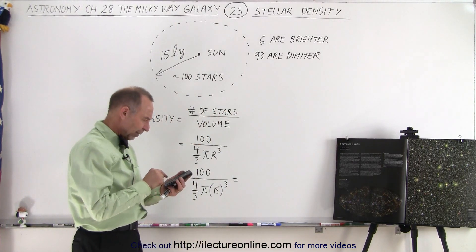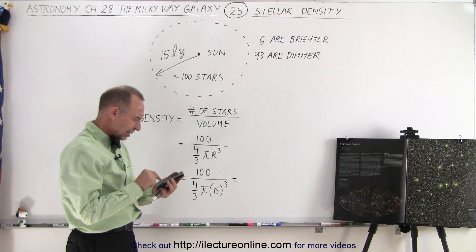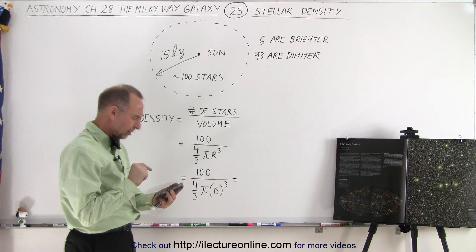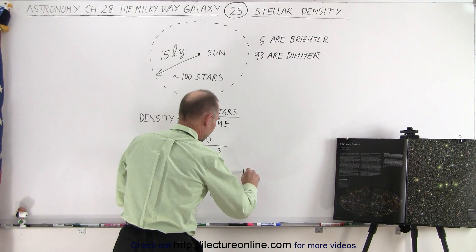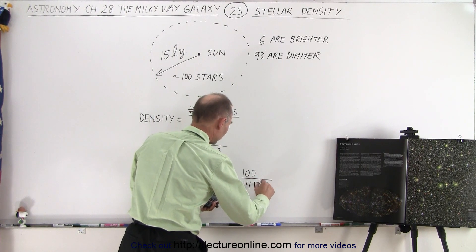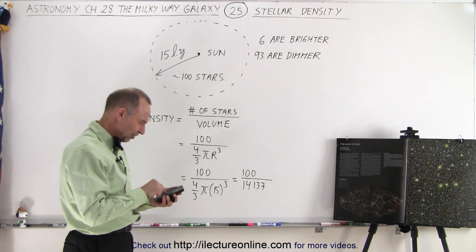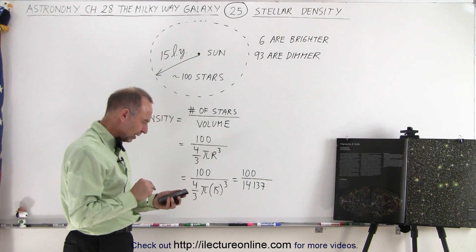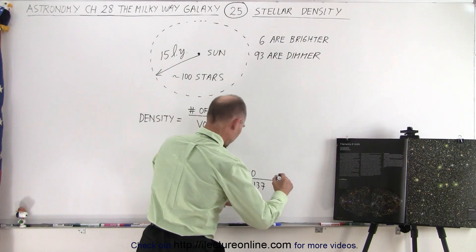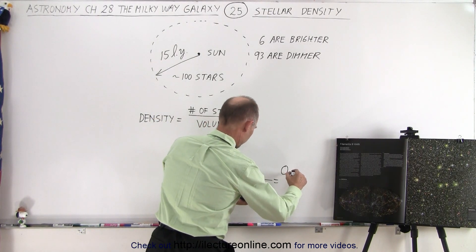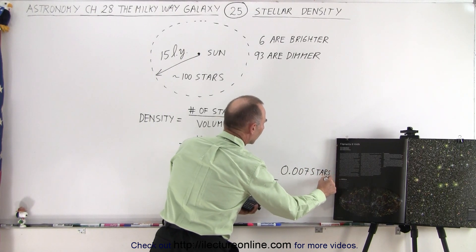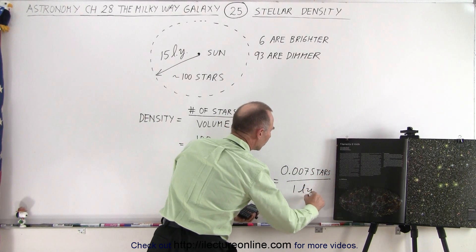So how much is that? So we have four divided by three times pi times 15 cubed equals, I get 100 divided by 14,137. So let's take the inverse of that times 100, and so we end up with, this would be equal to 0.007 stars per one cubic light year.